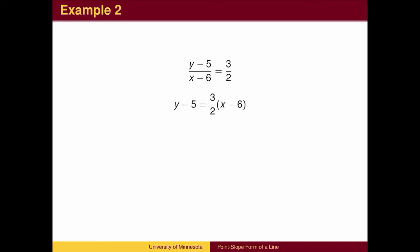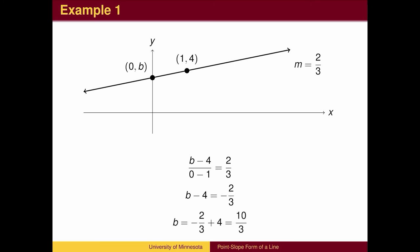Let's confirm this using the point-slope formula. Returning to the first example, we could find the intercept directly using the slope formula. Notice that for the final calculation, we are combining the same terms as we did when we simplified the point-slope form to the slope-intercept form.